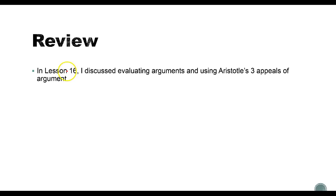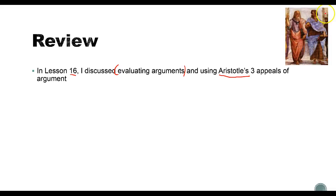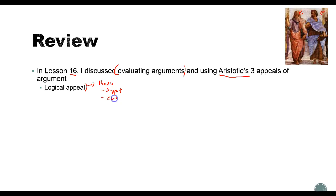Let's review quickly. In lesson 16, I talked about evaluating arguments effectively — how to evaluate an argument and say whether it's strong or weak. One way is by using Aristotle's three appeals of arguments. Aristotle said all arguments convince people in three ways. First is the logical appeal: an argument tries to convince people by using good logic, having a strong thesis, good support, and strong evidence. If an author has all of these things, he or she is making a strong logical appeal.